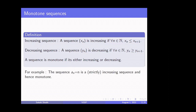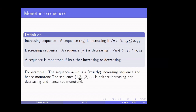Consider the sequence an = n. This is strictly increasing and hence monotone, because for every n in ℕ, an is strictly less than an+1. Now, what does not qualify as a monotone sequence? If you consider the sequence 1, 2, 1, 2 and so on, it's not increasing because the second term is 2, the third term is 1, and 2 is greater than 1. But if you look at the third and fourth terms, the third is strictly less than the fourth, so it's not decreasing either. Hence, this sequence is not monotone.